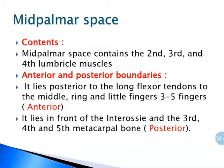The contents of the mid-palmar space are the second, third, and fourth lumbrical muscles. This space also has anterior and posterior boundaries. The mid-palmar space is posterior to the long flexor tendons of the middle, ring, and little fingers — that is fingers three to five — thus forming the anterior boundary. The space lies in front of the palmar interossei and the third, fourth, and fifth metacarpals, forming the posterior wall.